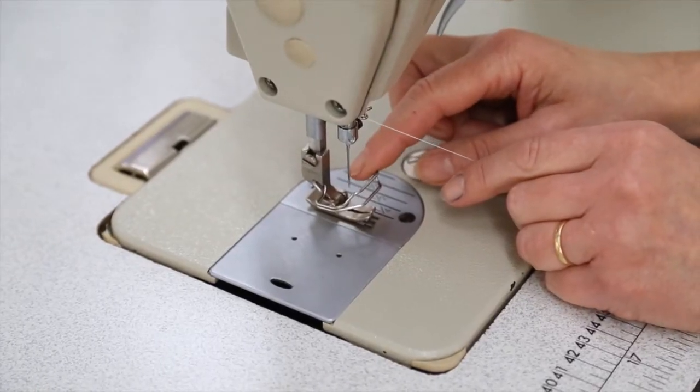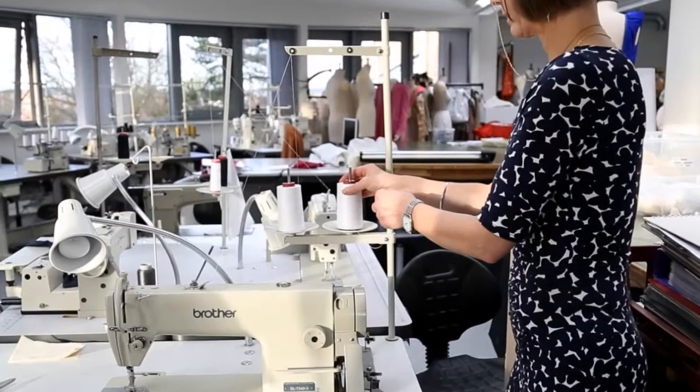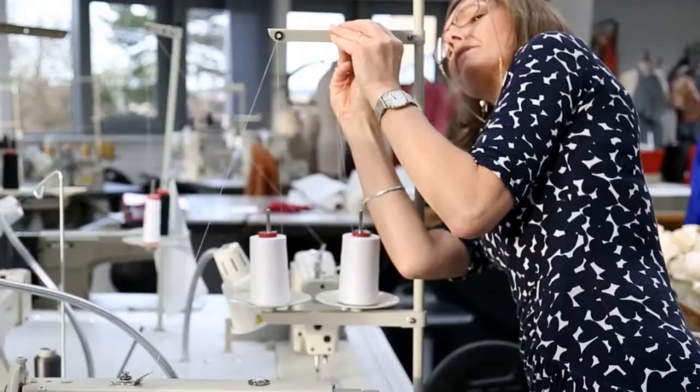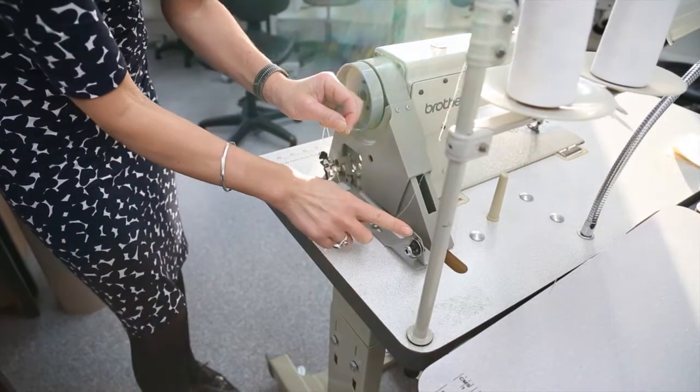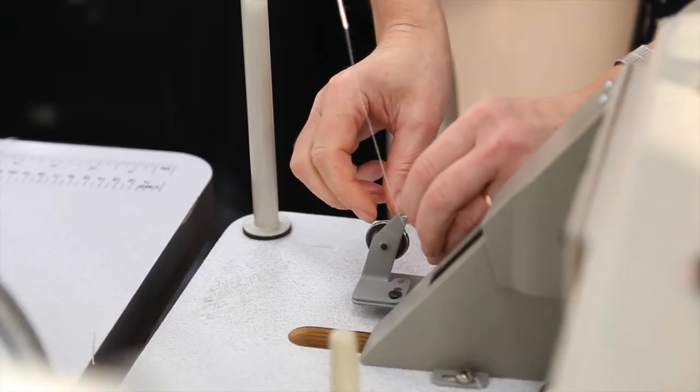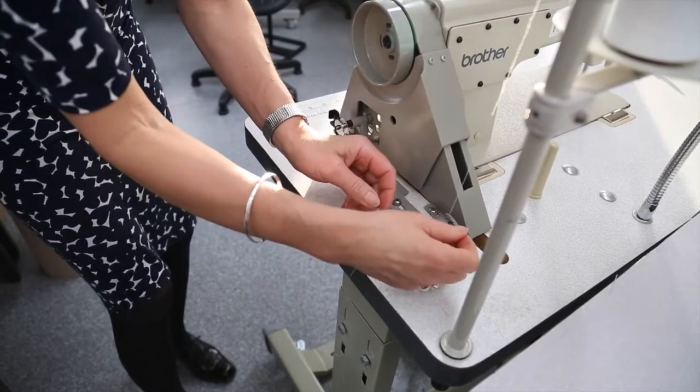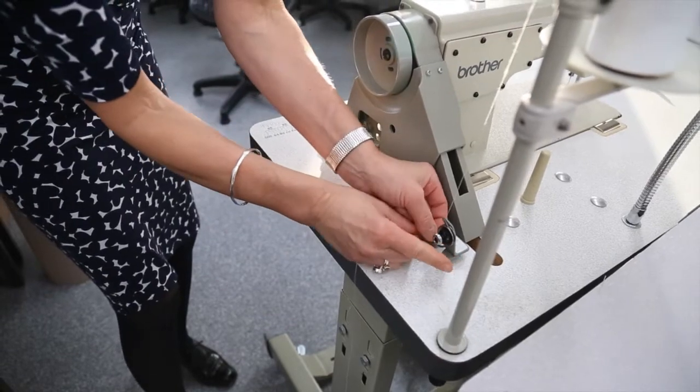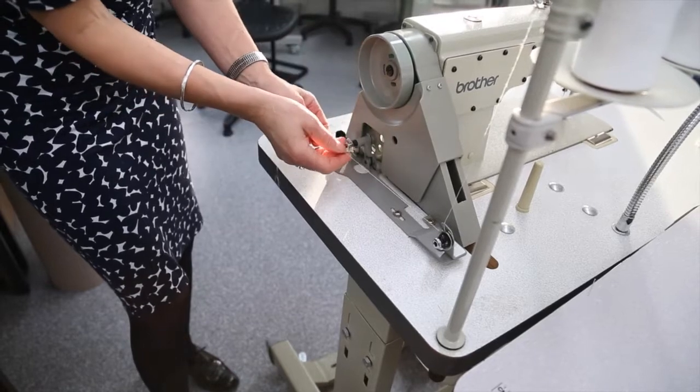In order to prepare to sew we need to be able to wind a bobbin. Before you wind your bobbin, do make sure that there is no thread in the needle. We're going to take the thread from this spool through this eye up here, down and through this eye, and between these two tension discs. This will give us the right tension to wind the bobbin well.